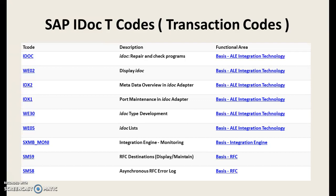The transaction code IDOC is basically for repair and check programs for the basis ALE integration. WE02 is for display IDOC. IDX2 is for metadata overview in IDOC adapter. IDX1 is for port maintenance in IDOC adapter. WE30 is for IDOC type development. WE05 is for list of all the IDOCs existing in the system — both predefined IDOCs and customized IDOCs.